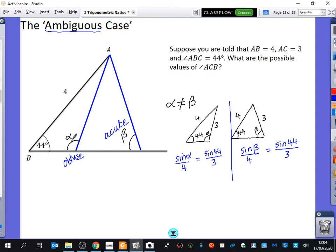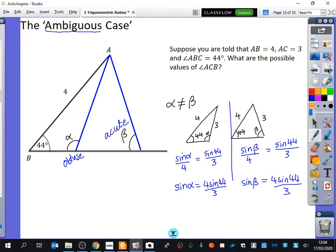But before we look at that information, we need to find out when we actually come down to this stage here that sine alpha is 4 sine 44 over 3 and sine beta is the same thing, which is 4 sine 44 over 3. We need to make sure that we can come up with two different answers for alpha and beta. And I'm going to show you what those two answers are in just a second.